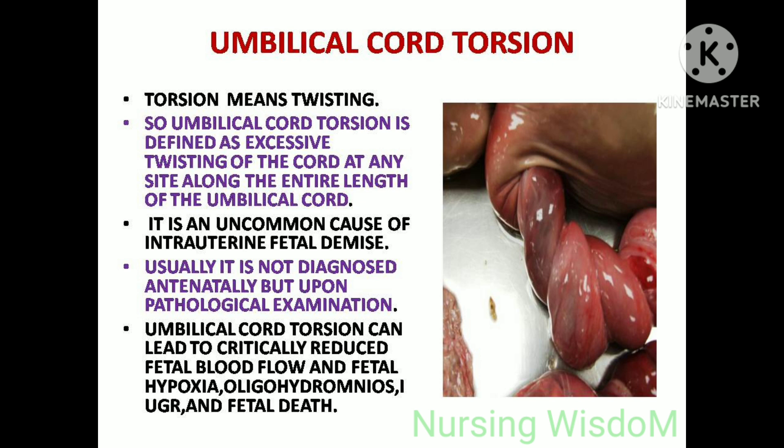Umbilical cord torsion: torsion means twisting. Umbilical cord torsion is defined as excessive twisting of the cord at any site along the entire length of the umbilical cord. It is an uncommon cause of intrauterine fetal demise, usually not diagnosed antenatally but upon pathological examination. It can lead to critically reduced fetal blood flow, fetal hypoxia, oligohydramnios, IUGR, and fetal death.